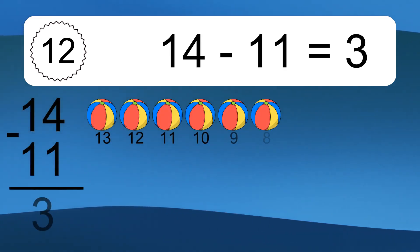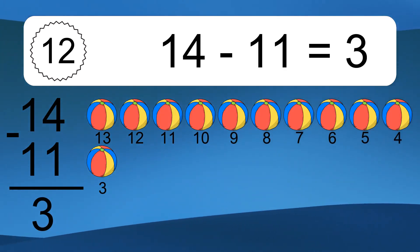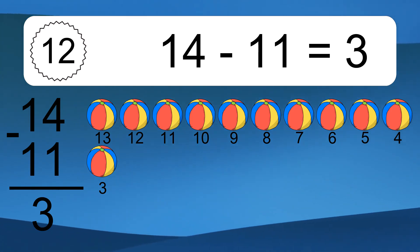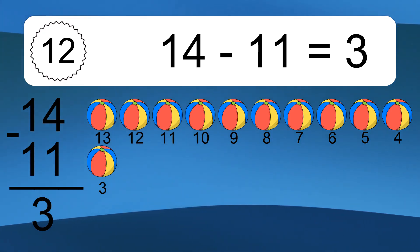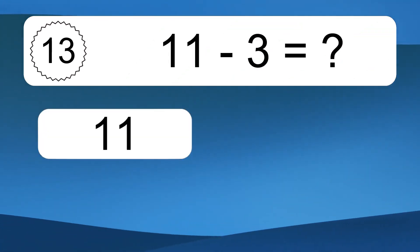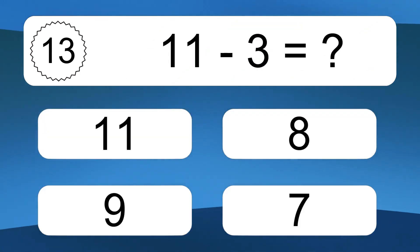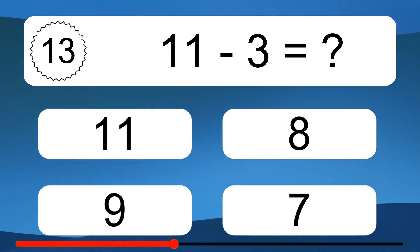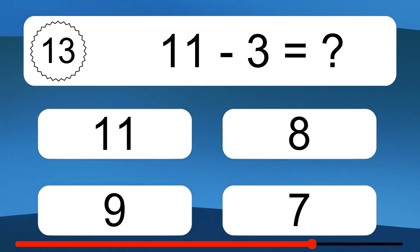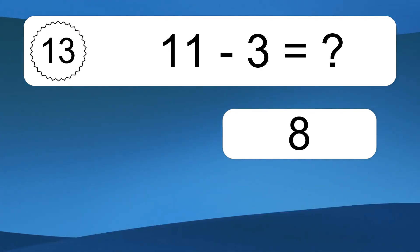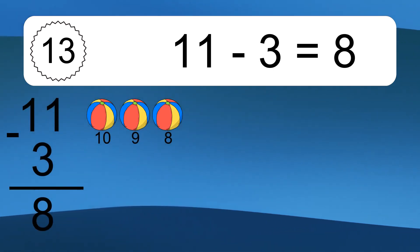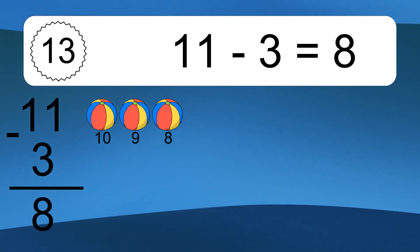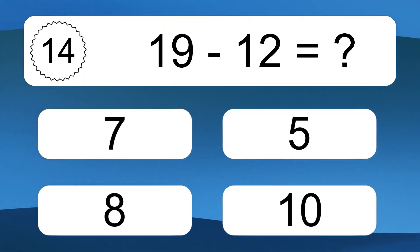14 minus 11 equals what? 14 minus 11 equals 3. Let's count it: 13, 12, 11, 10, 9, 8, 7, 6, 5, 4, 3. 11 minus 3 equals what?